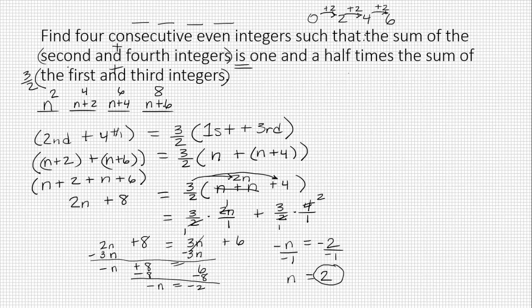We can check and see if those are really solutions to this problem by plugging them back into the original problem. So the original problem said that if you take the second and the fourth, which in this case would be four plus eight, you would get the same thing as three halves times the first plus the third.